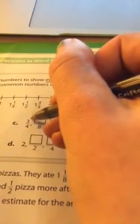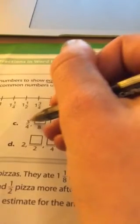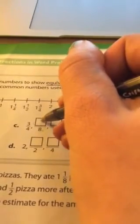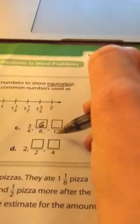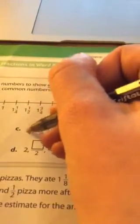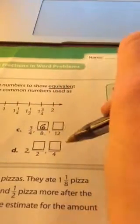3 fourths. 4 times what is 8? Times 2. So I also need to multiply the numerator by 2. 4 times 2 is 8. 3 times 2, the same number, is 6. 4 times what gives us 12? 3. So if I multiply 4 by 3 to get 12, I also have to multiply 3 by 3 to get 9.